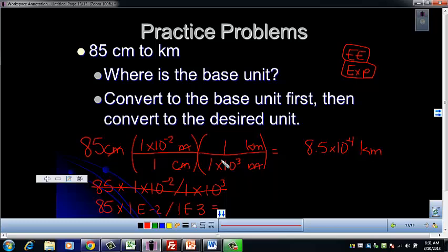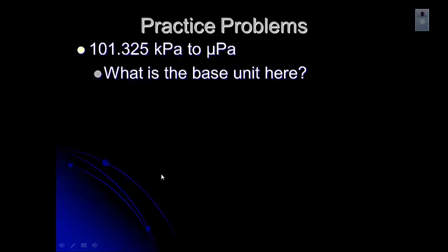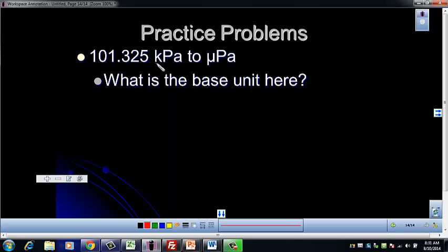Let's try one more example. The base unit is the one without a prefix. Looking at this problem, we have kilo and micro as prefixes, so PA — the pascal, a unit of pressure — is the base unit. Even if you don't recognize a unit, it works the same way as meters or liters. There will be unfamiliar units in class from time to time, but the process is identical. Try setting it up yourself, then we'll take a look.